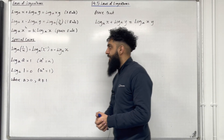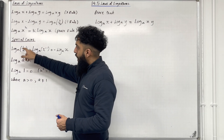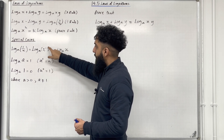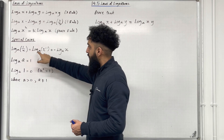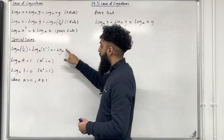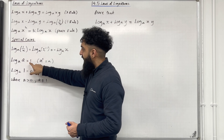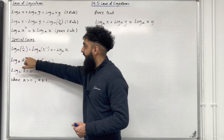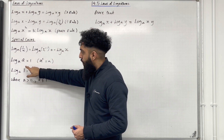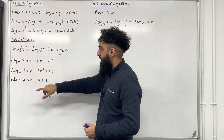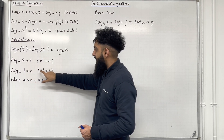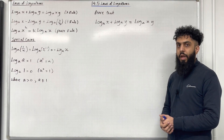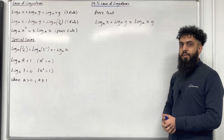Moving on to the special cases. Log base A of 1 over x: since 1 over x is the same as x to the power minus 1, we can bring down the power minus 1 using the power rule, giving minus log base A of x. Log base A of A is equal to 1, simply because A raised to the power 1 is precisely equal to A. Log base A of 1 is equal to 0, simply because A to the power 0 is equal to 1. Where A is a constant greater than 0 and A is not equal to 1.